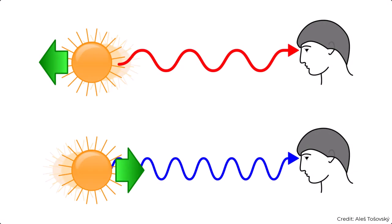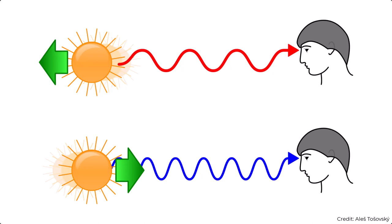For the case of light, the decreasing of wavelength or increasing of frequency causes it to be shifted to the bluer end of the spectrum, so we call this blueshift.